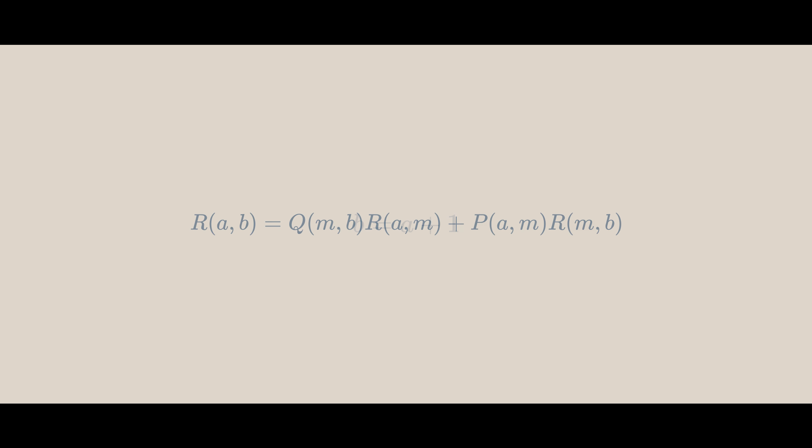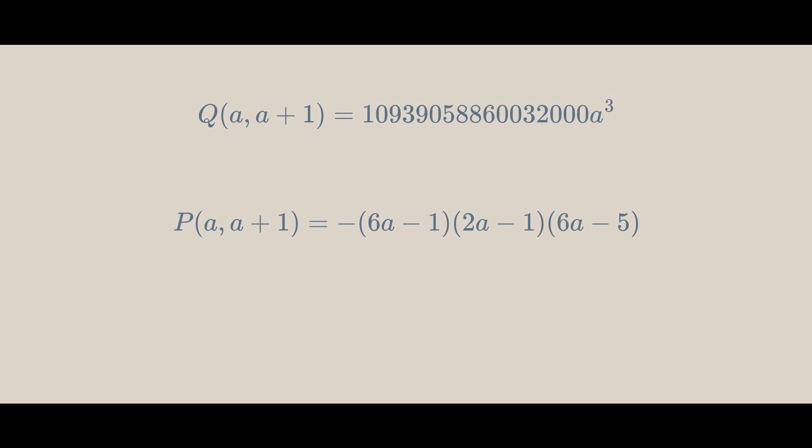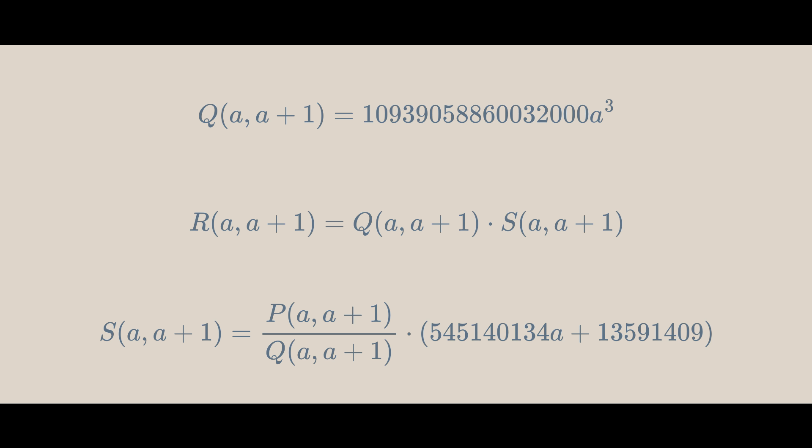Now, let's look at the cases where b is one more than a. This is going to be the base case for our recursion, because there won't be any more values between a and a plus 1. For P(a, a+1), it's the product from j equals a up to a of this, which is just this evaluated at j equals a. There is the same logic for Q(a, a+1) and S(a, a+1). For R(a, a+1), let's replace S(a, a+1) with this and simplify.